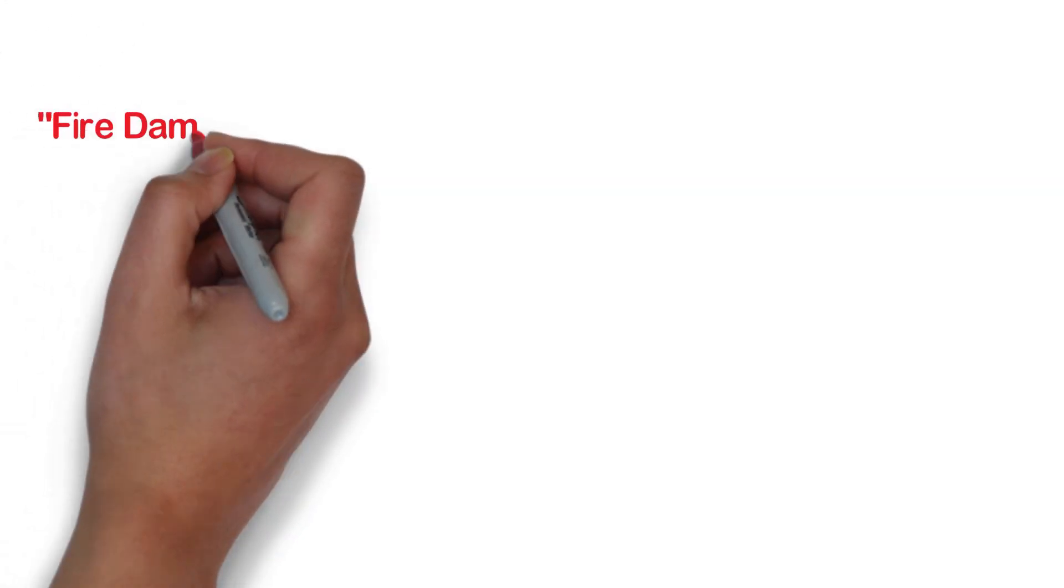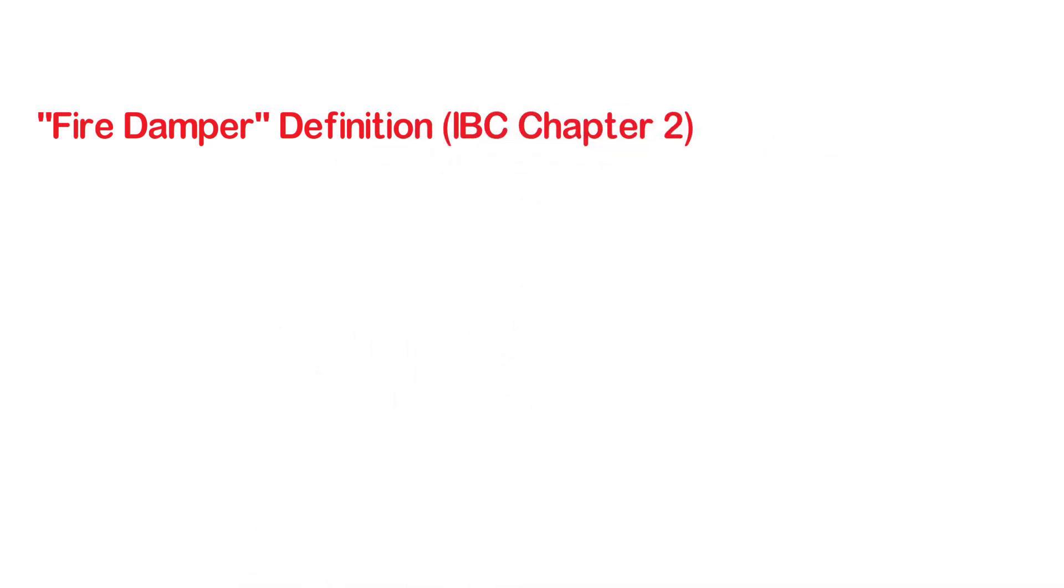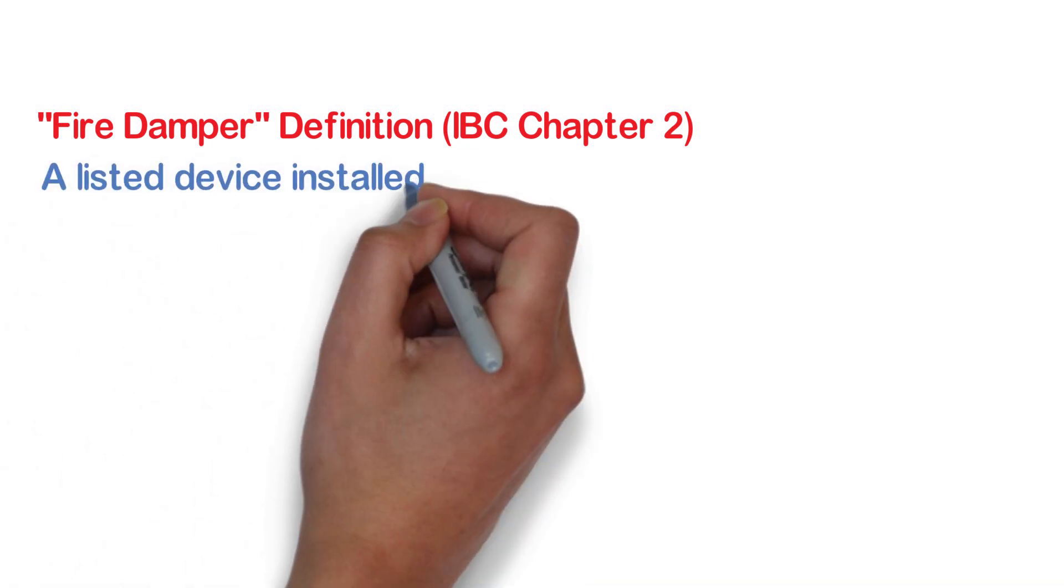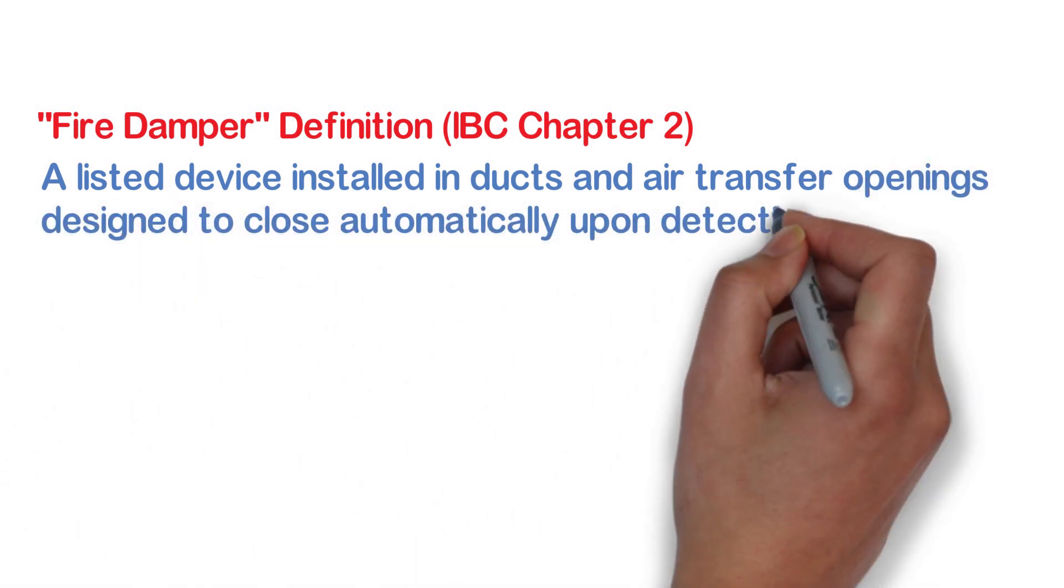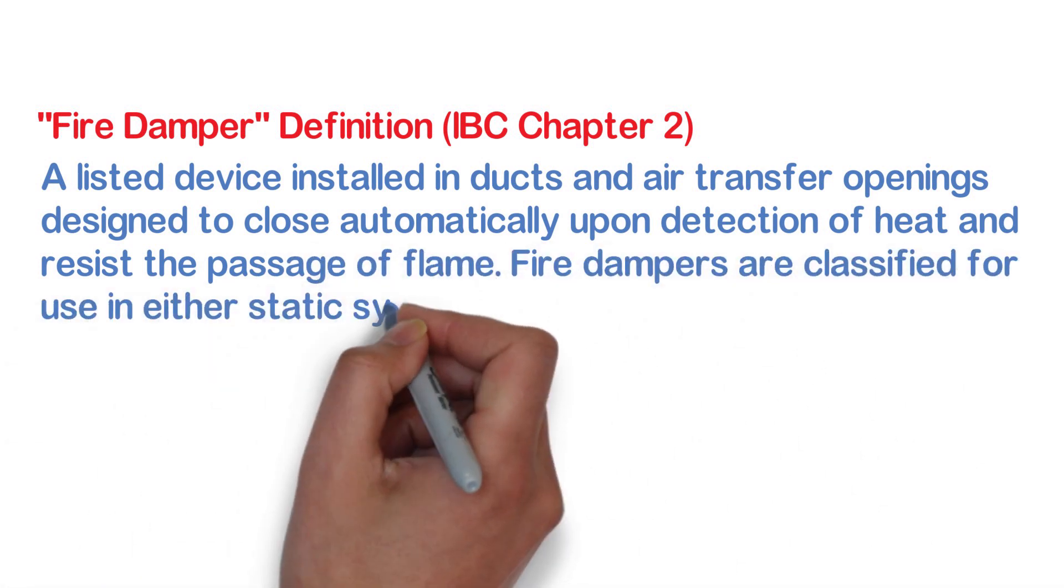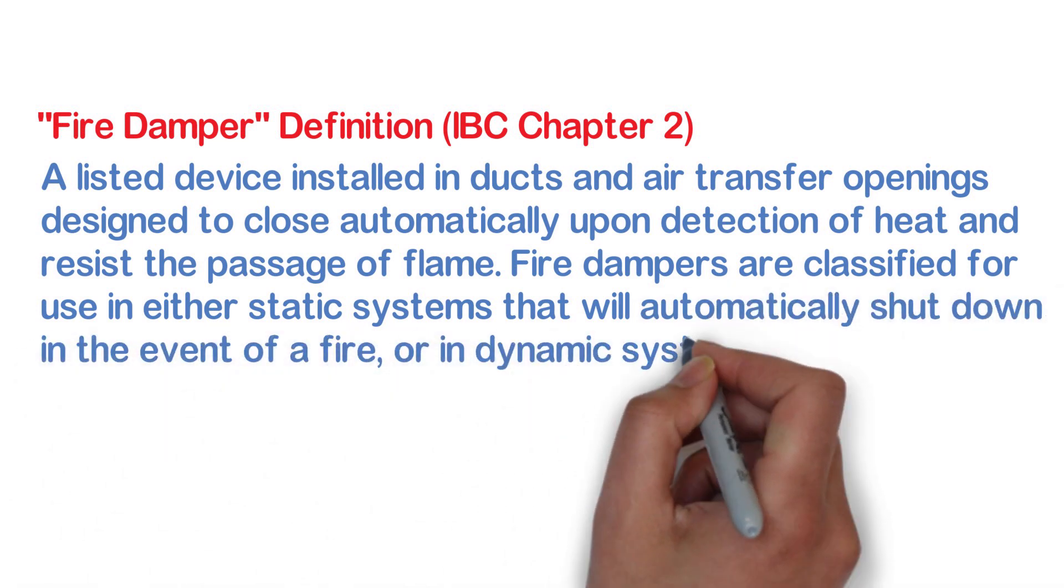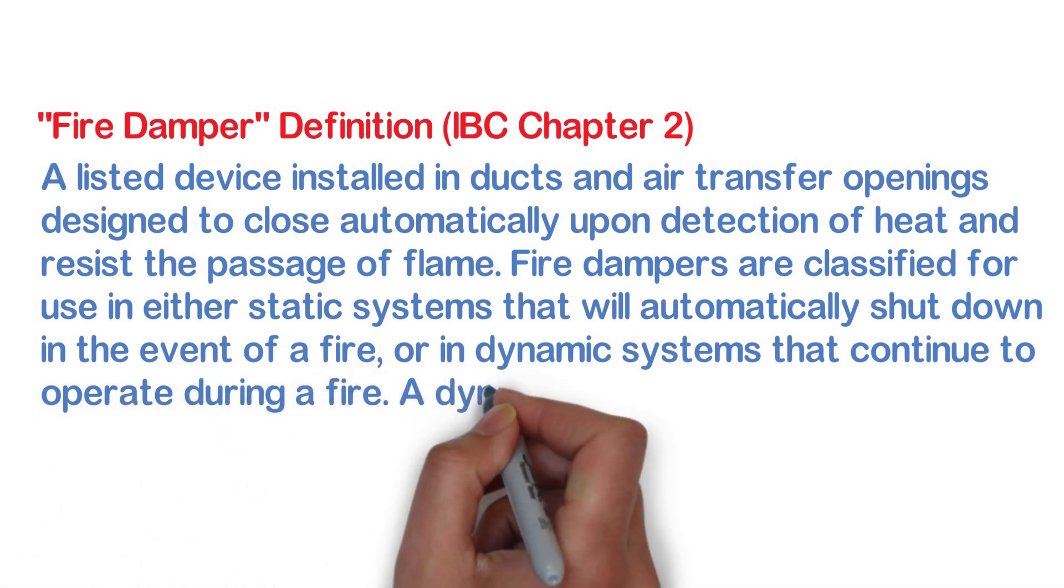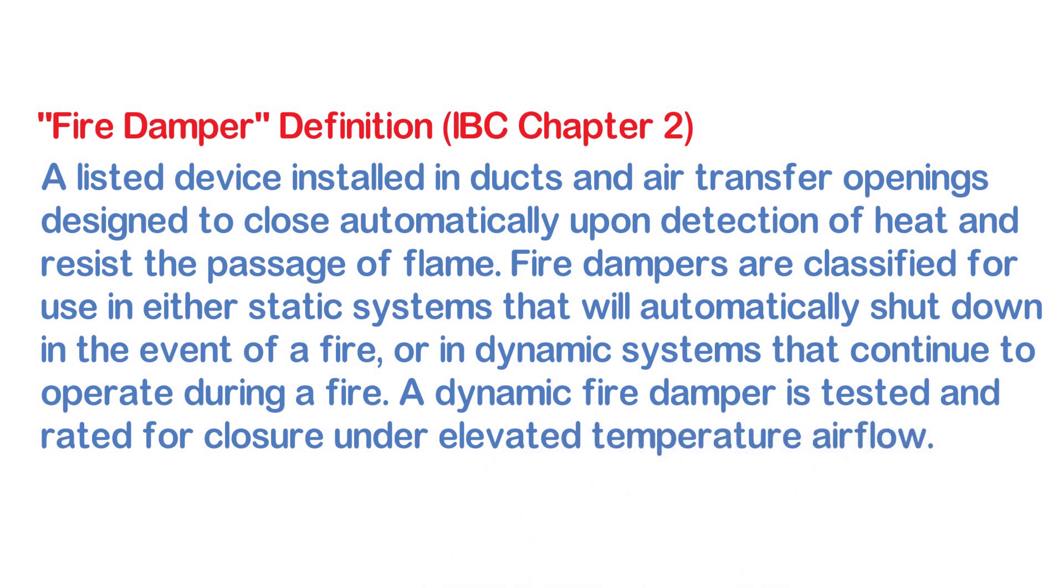To understand what a damper is, let's read the definition of a fire damper. We can actually find the definition of dampers in chapter 2 of the IBC. If you look at the definition, fire damper is defined as a listed device installed in ducts and air transfer openings designed to close automatically upon detection of heat and resist the passage of flame. Fire dampers are classified for use in either static systems that will automatically shut down in the event of a fire or in dynamic systems that continue to operate during a fire. A dynamic fire damper is tested and rated for closure under elevated temperature airflow.